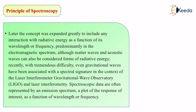Predominantly in the electromagnetic spectrum, although matter waves and acoustic waves can also be considered. We know that sunlight is not only electromagnetic — it also contains particles like photons. Photons are nothing but small particles, meaning it is also matter. So apart from electromagnetic waves, matter waves can also be considered. And acoustic waves can also be considered — meaning not only light waves but also sound waves or heat waves. Any kind of energy waves as well as matter waves can be considered as forms of radiative energy.